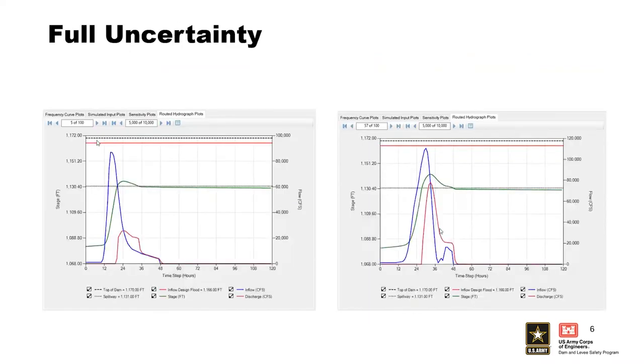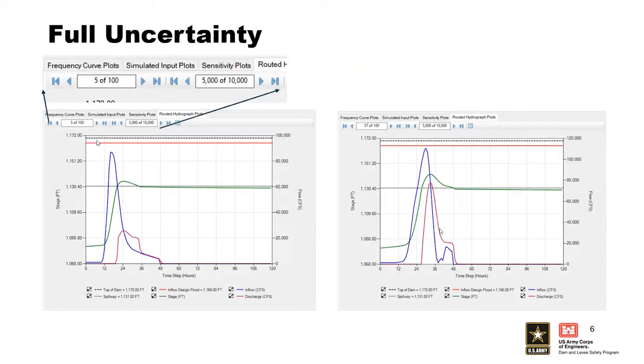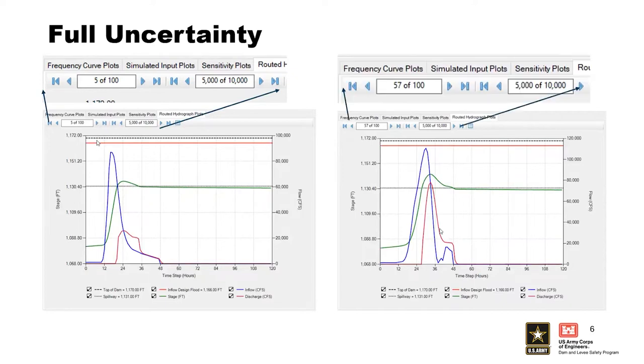Here we can see two routed hydrographs from a full uncertainty simulation. For this simulation, the user selected 100 realizations. Recall that for each realization, 10,000 interloop routed hydrographs are computed. In this example, we're showing the difference between the realization that was the 5 of 100 event versus the 5,000 out of 10,000 event.